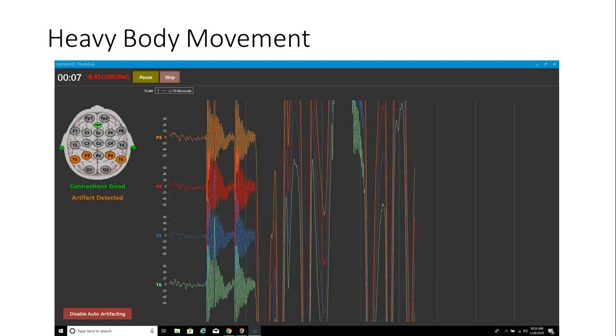If you see a pattern with high beta on one side and huge amounts of delta, very high, so high it's not even recognizable as EEG, but the connections are good, the person is moving a lot. That's something you might see if you're recording a map.